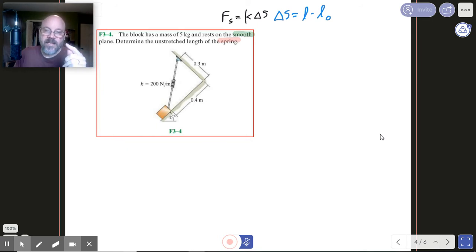But what I want you to see there is if we can get the force of the spring, since it tells us the spring constant, then we'd figure out the delta S. If we know the delta S, then we could figure out the original length because we know its length right now. How do we know what its length is right now? Well, what we know is we know this whole side right here is 0.5.